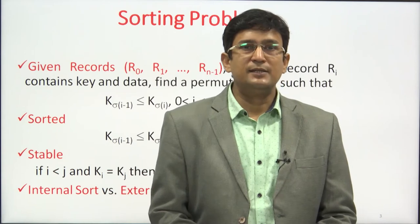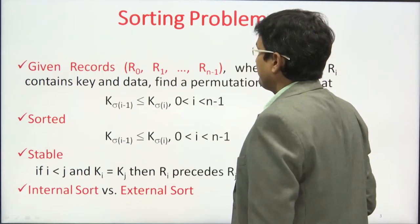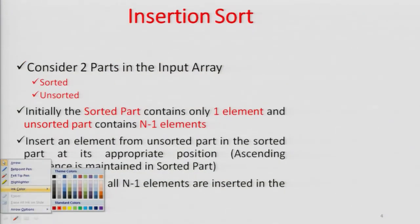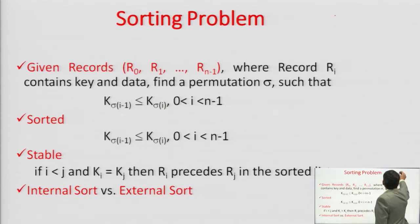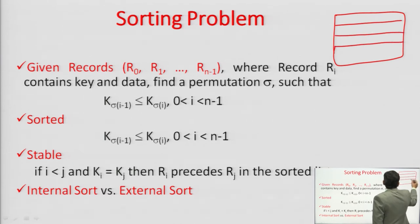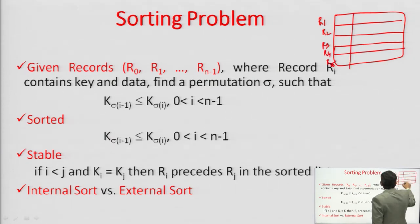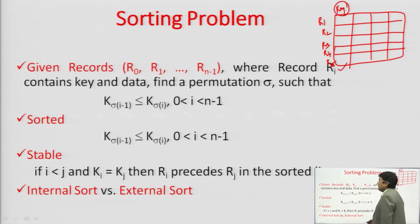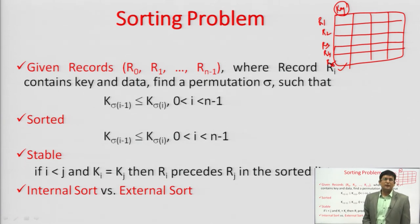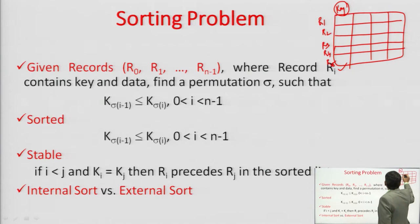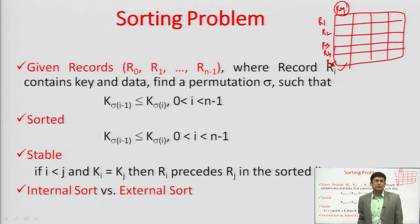Let us understand sorting first. Consider a table with many records, each randomly arranged. There are various fields, but one field is selected as the key. This key will have a unique value — it cannot be duplicated. For example, a student's roll number, employee ID, or Aadhaar number — these are all unique. That is the key value. We need to arrange these records according to the key values, and for that we require sorting.